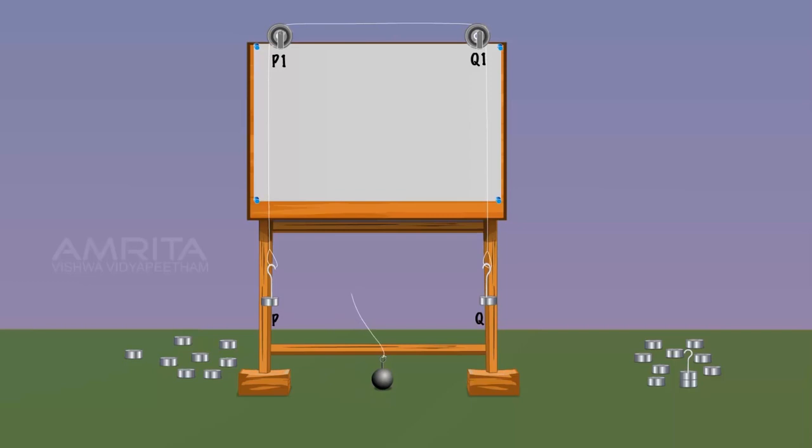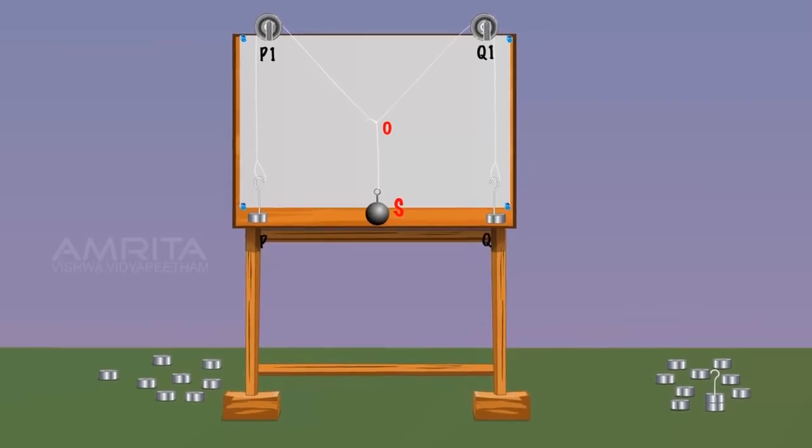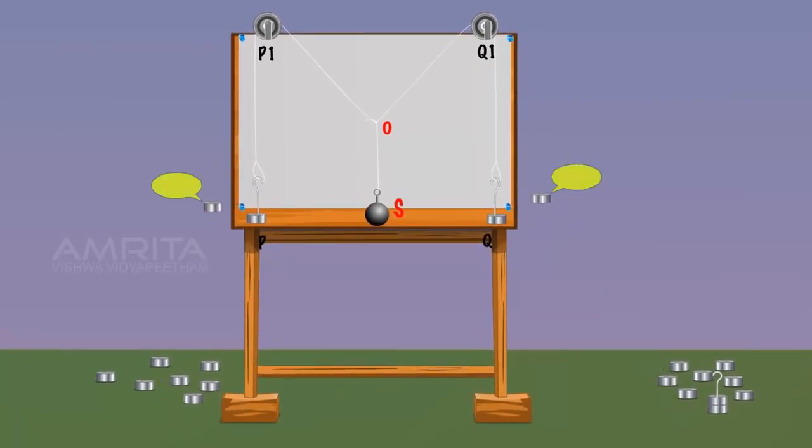An unknown weight attached to a third string is tied to the middle of the first thread and marked as O and S. Hang another 20g to both ends.